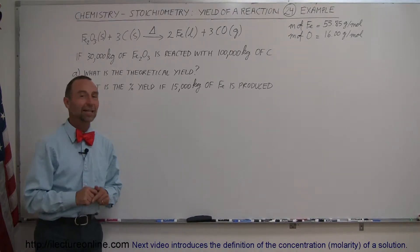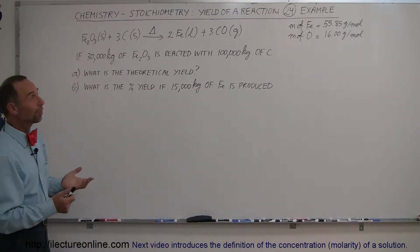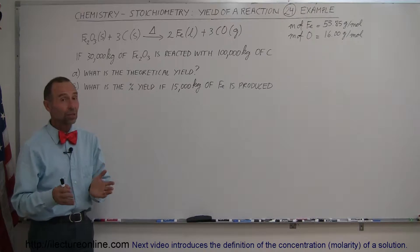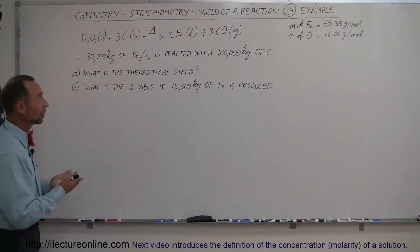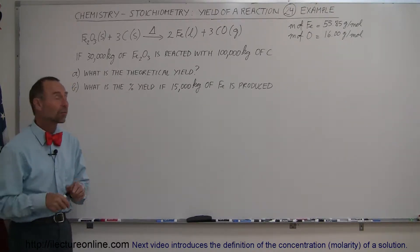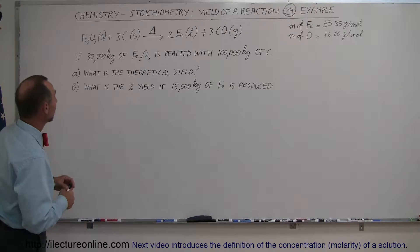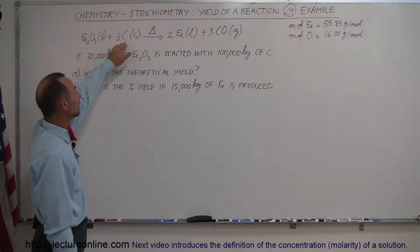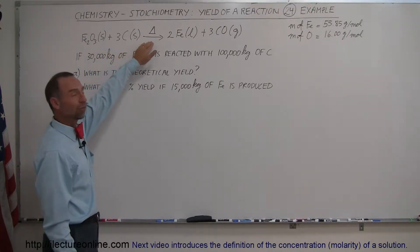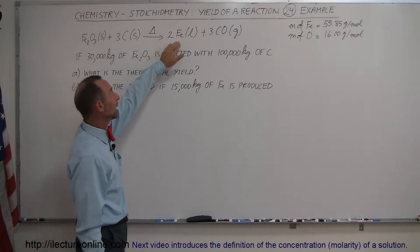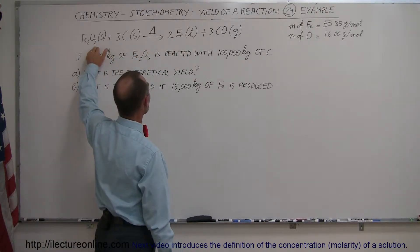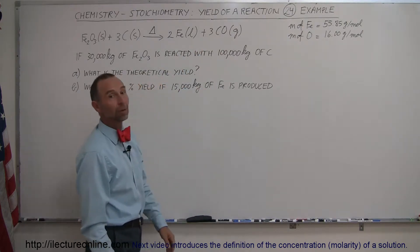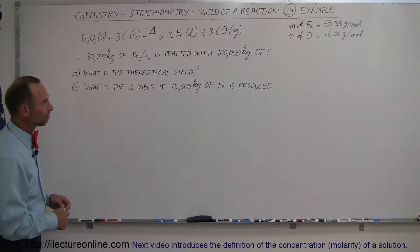Welcome to our lecture online. Here's an example of how we deal with theoretical yields, actual yields, and percent yields in a chemical reaction. Here's a very famous chemical reaction: we have iron oxide and we mix it with carbon, add some heat, and the result is that we get the iron away from the iron oxide, and as a byproduct we have some carbon monoxide gas.